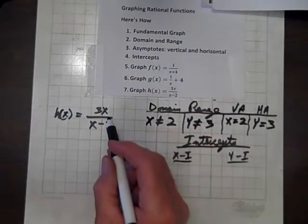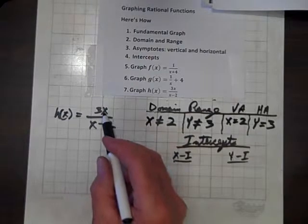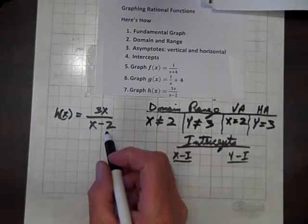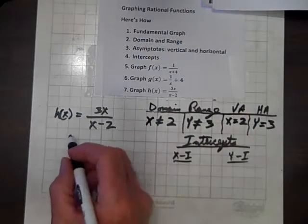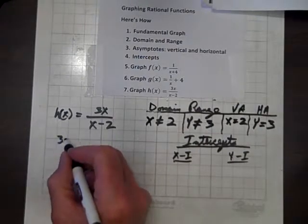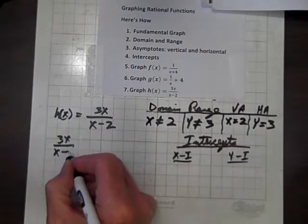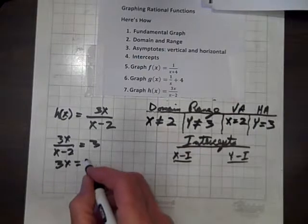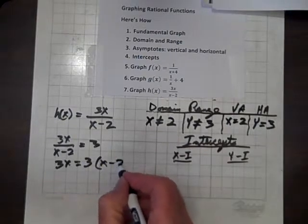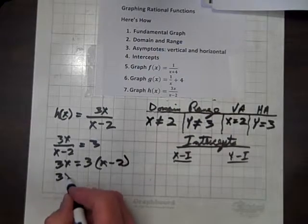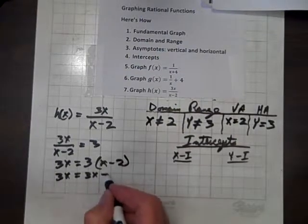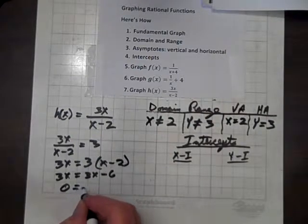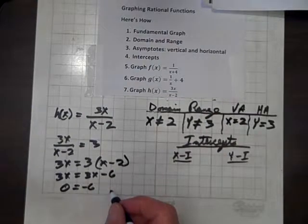And if you set this quotient equal to 3 and solve, you'll wind up with an impossible situation. Let me show you what I mean. 3x over x minus 2 equals 3. So 3x equals 3 times x minus 2. So 3x equals 3x minus 6. Subtracting 3x from both sides, we get 0 equals negative 6. And that's impossible.